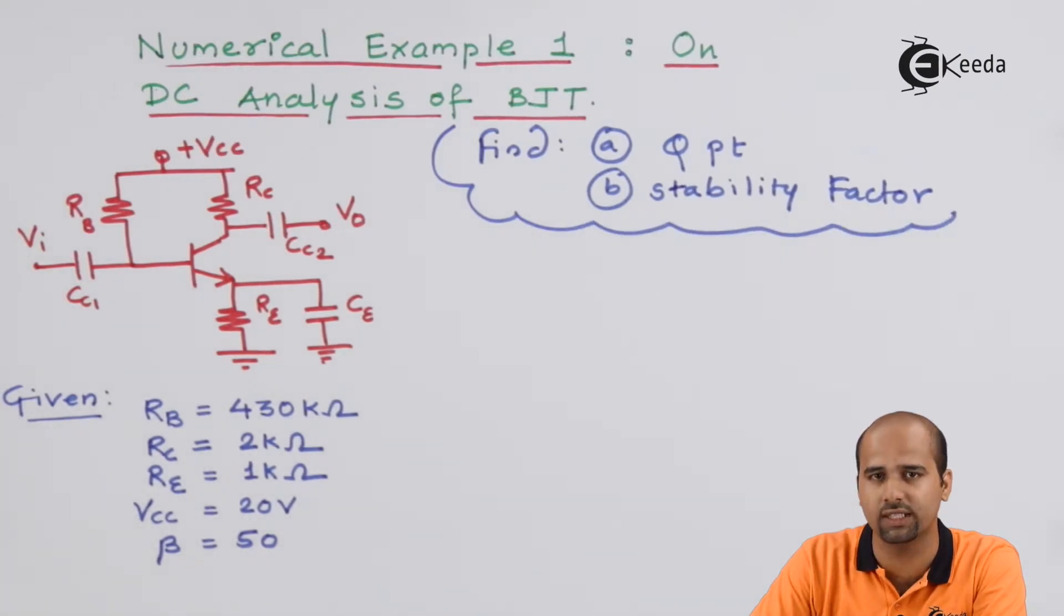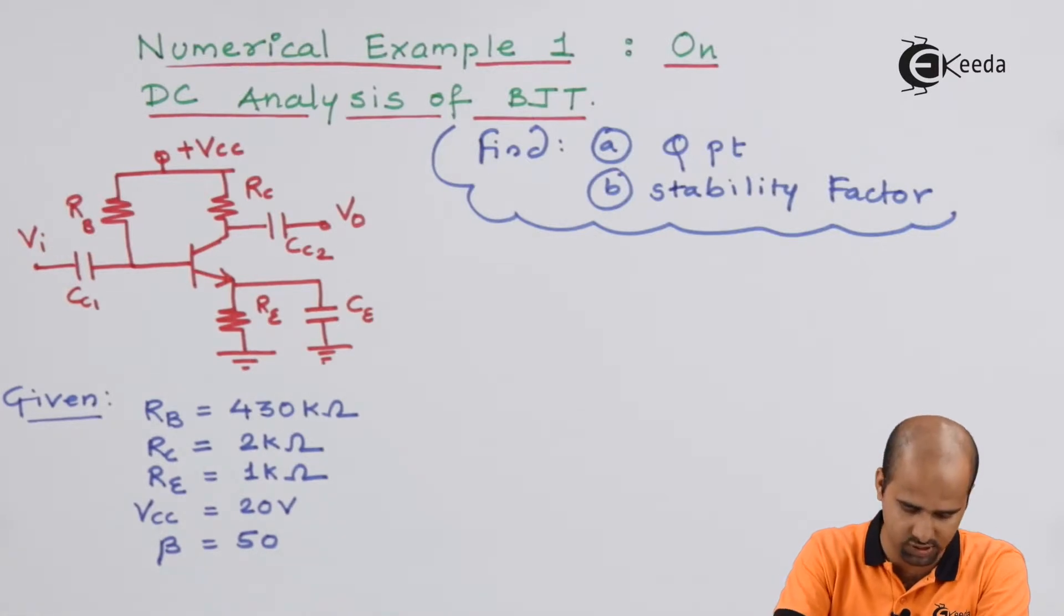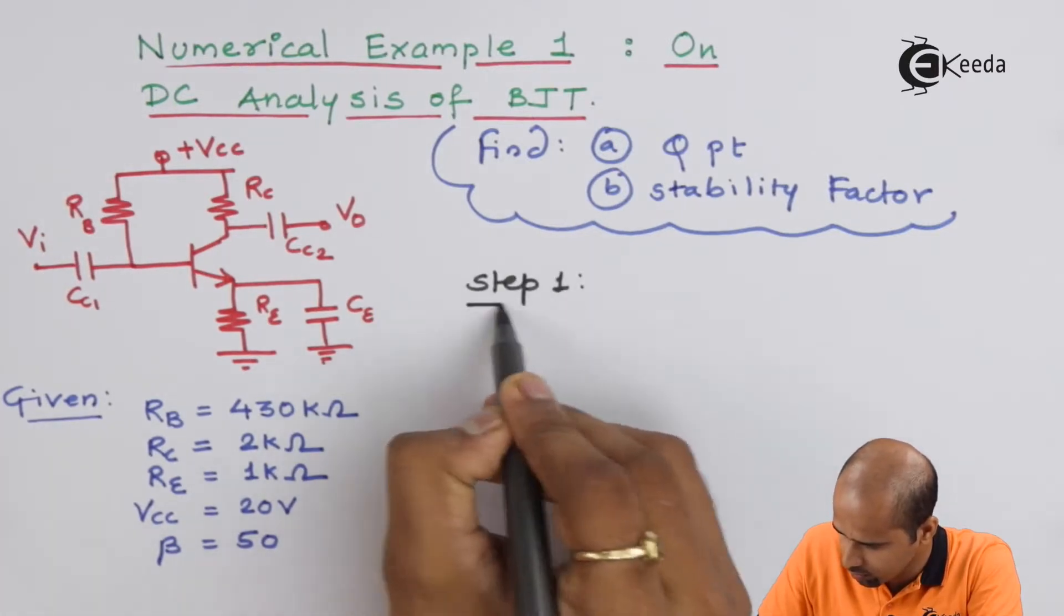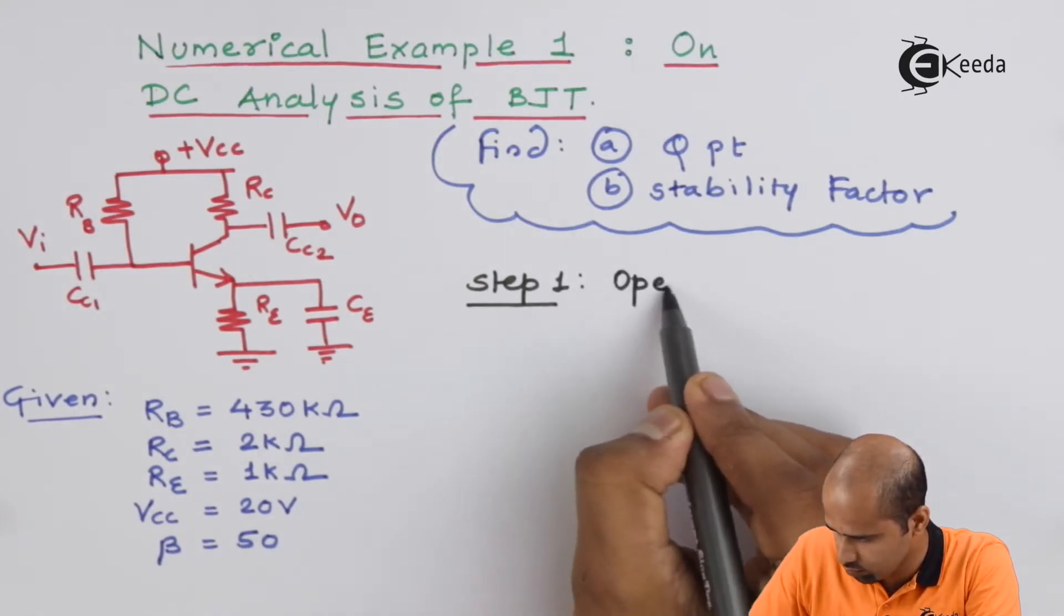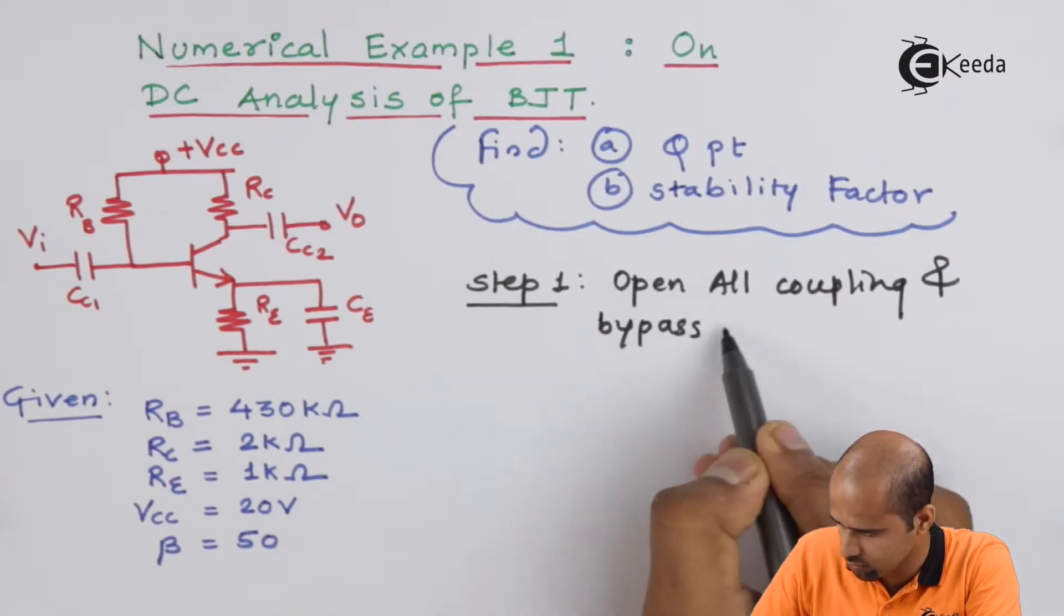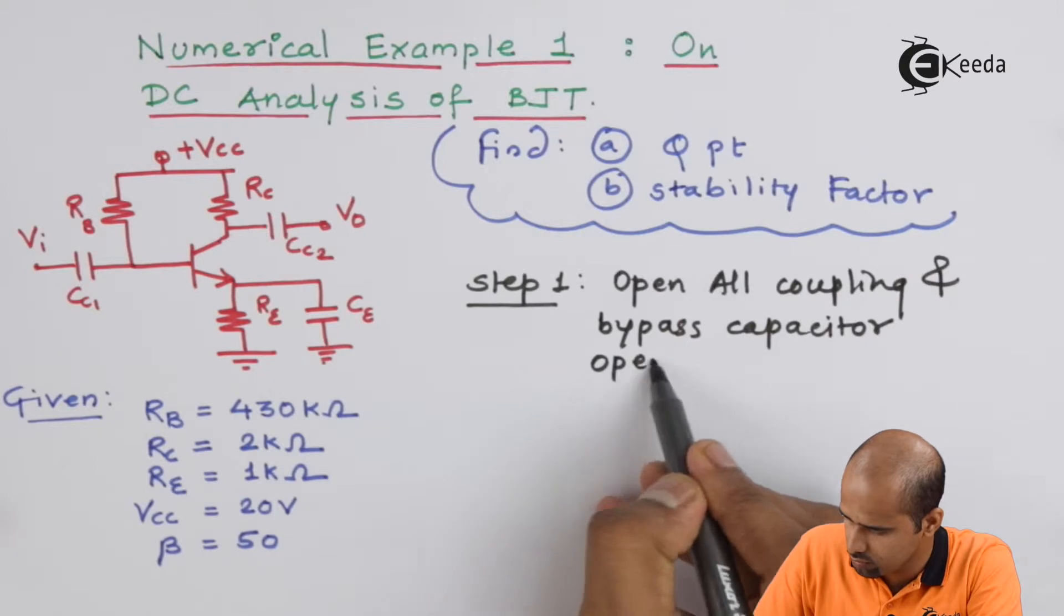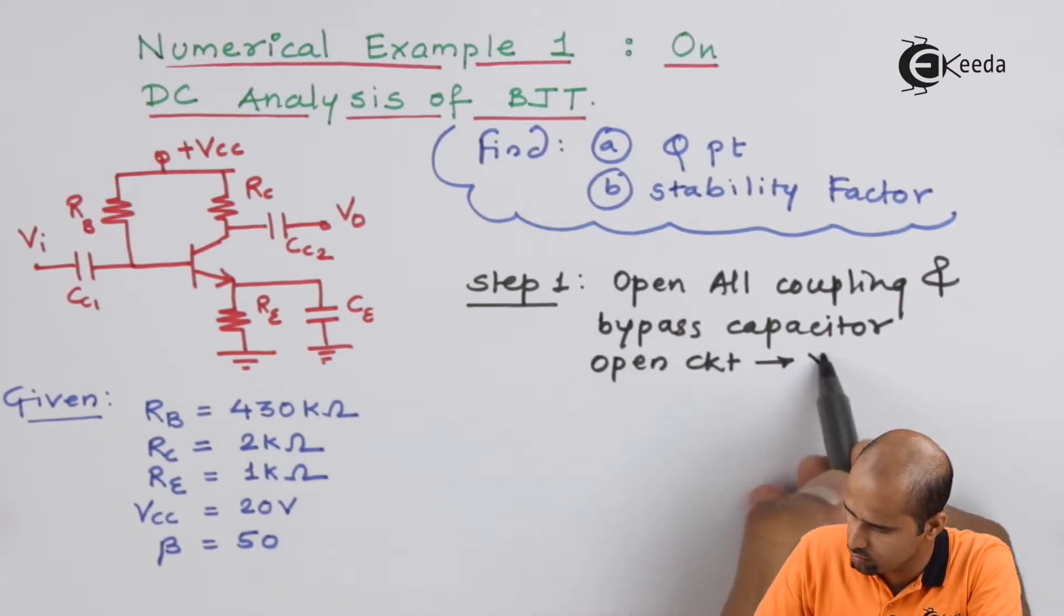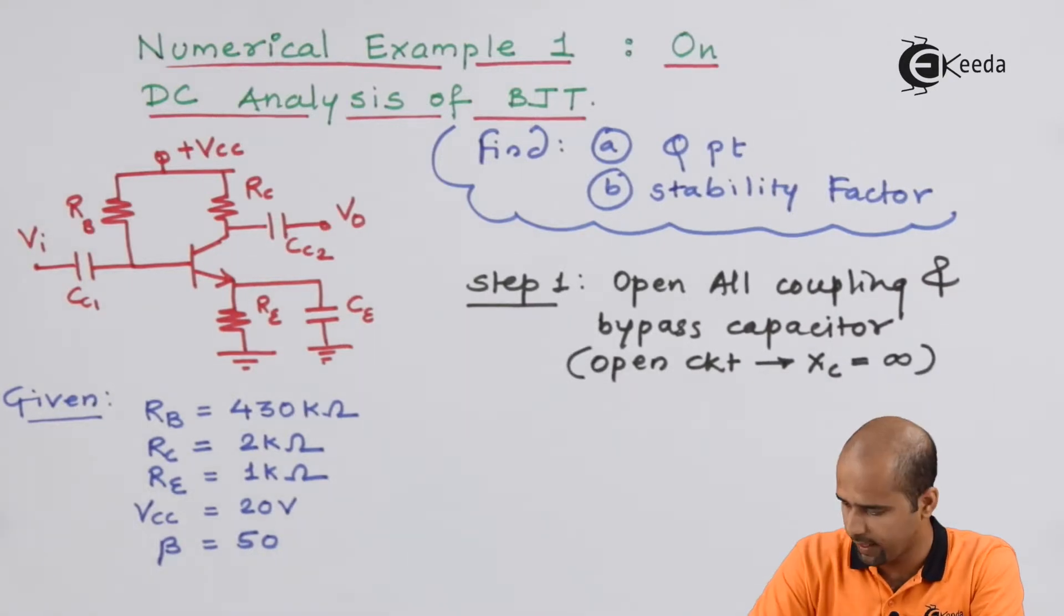We will have to start the answer from the basic first step of DC analysis where whenever we are starting with the DC analysis it's a DC, so frequency is zero, so capacitive reactance is infinite. That means open circuit will have to keep all the coupling and bypass capacitor open circuited. So your first step is step one. And now we will redraw this circuit for complete DC analysis.